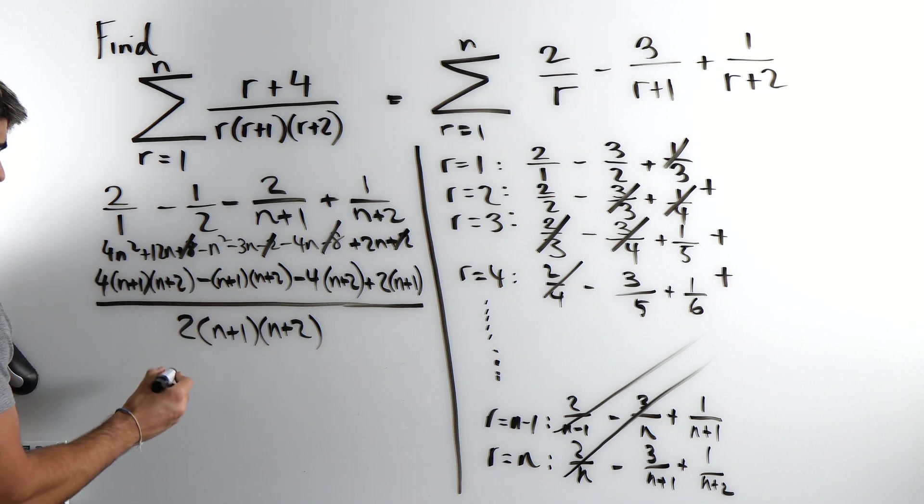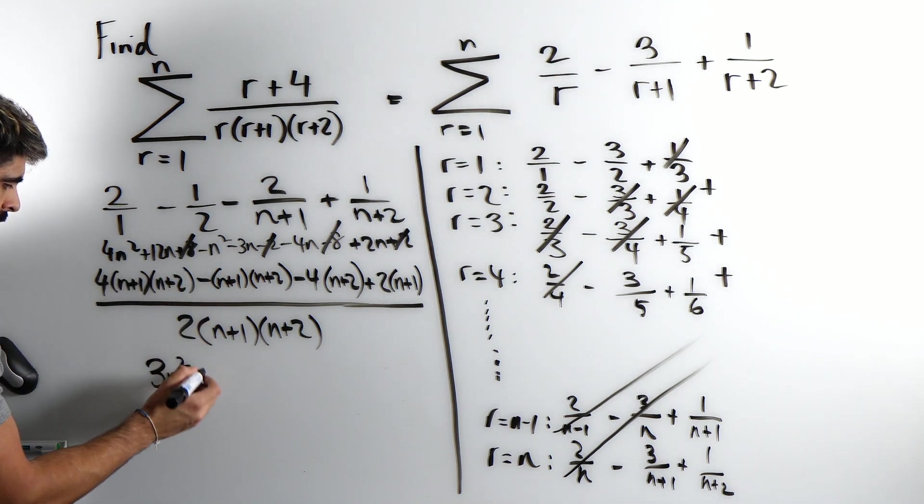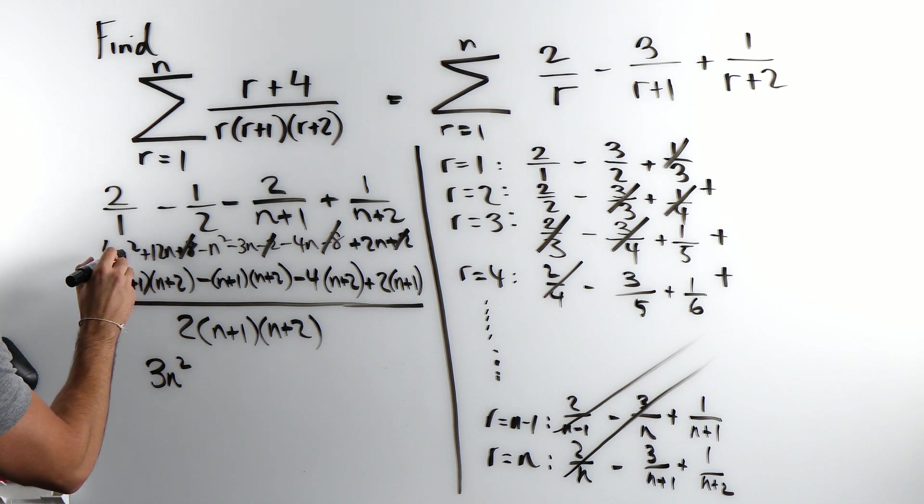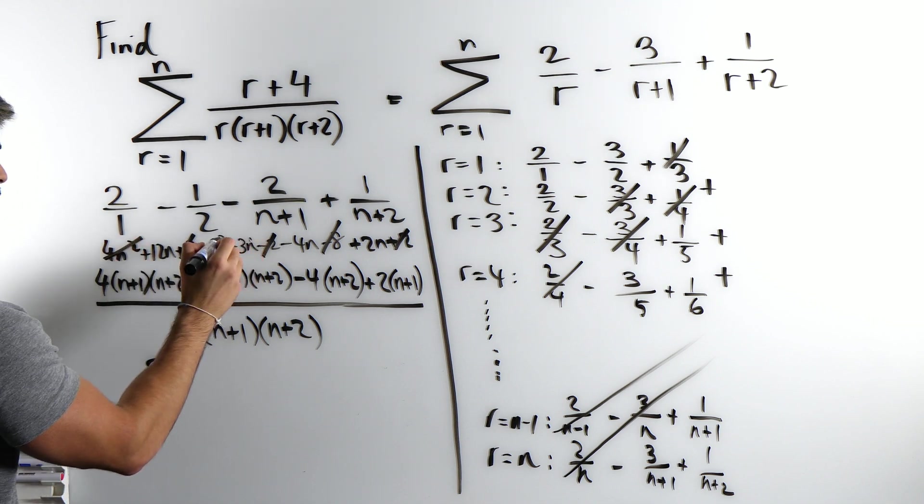4n squared minus n squared is 3n squared. So that is done.